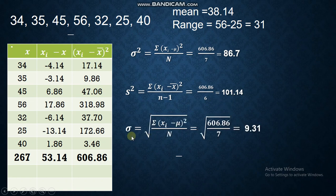Now, let's have this. What is this? Very good. Standard deviation. It is population standard deviation. So, the difference is it has the square root. So, you substitute. 606.86 divide by 7. And square root of the answer, you will have 9.31.